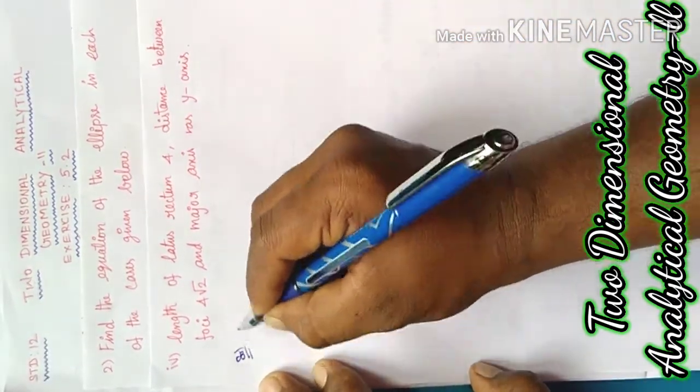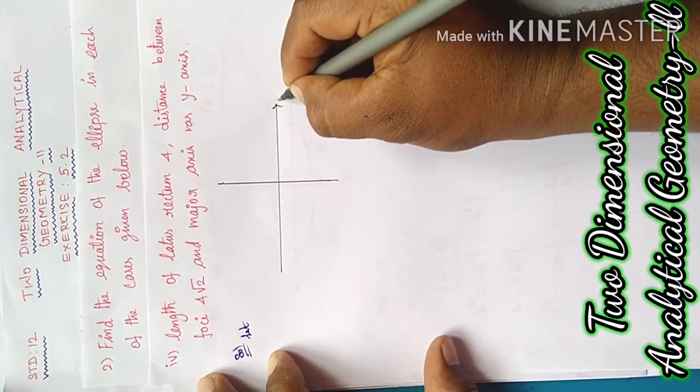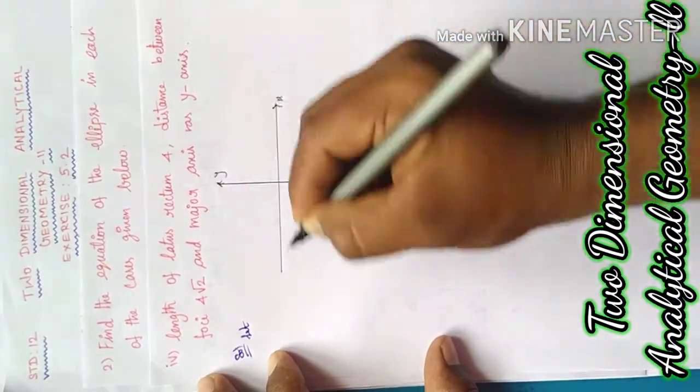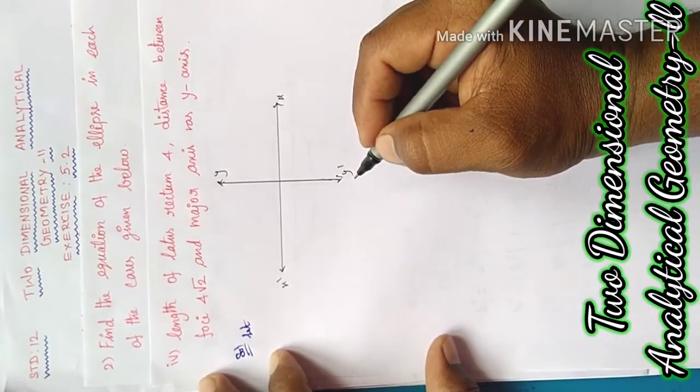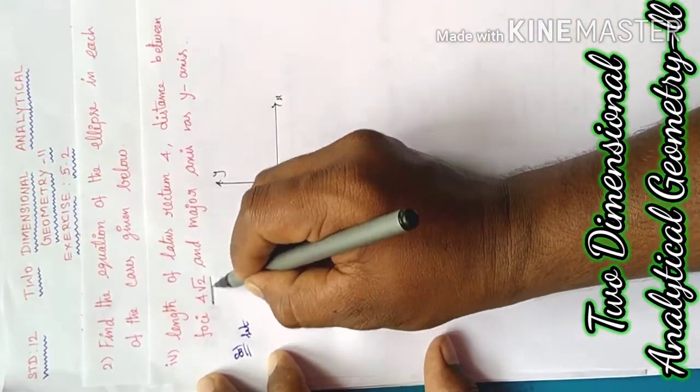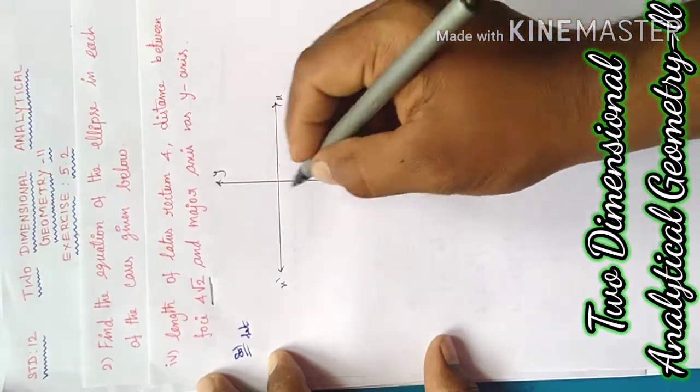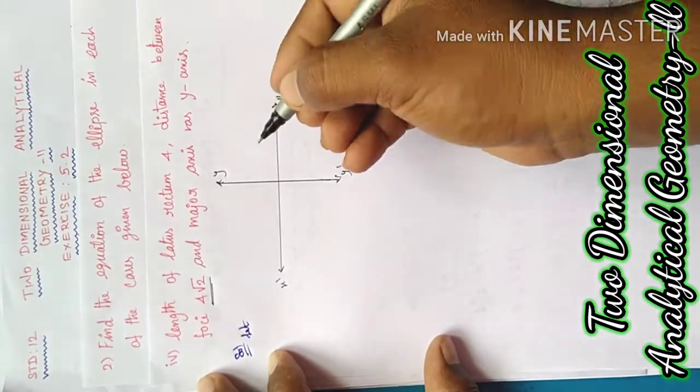Solutions. Let's draw x-axis, y-axis, x dash and y dash. Marking the first focus at 4 into root 2 on the y-axis.